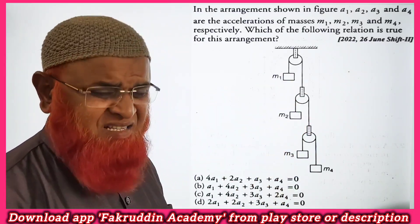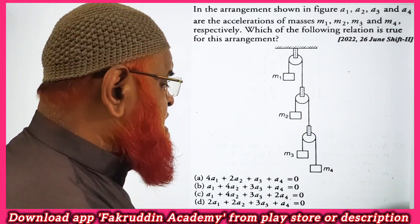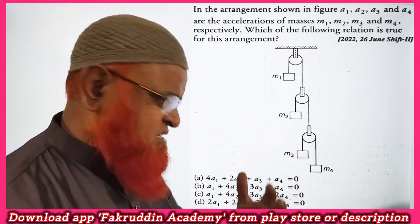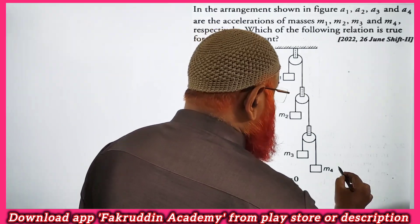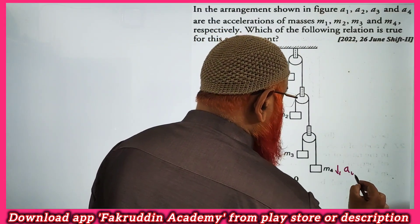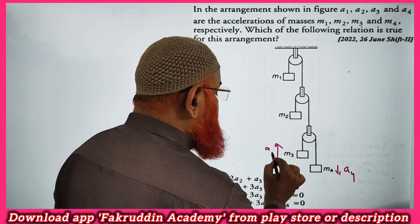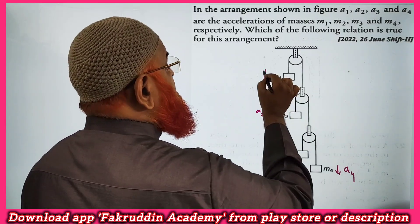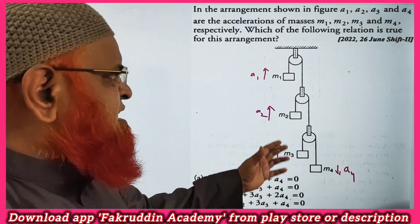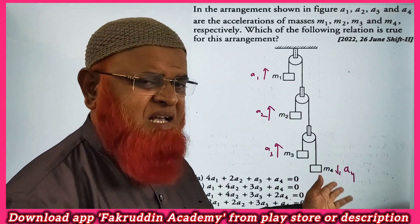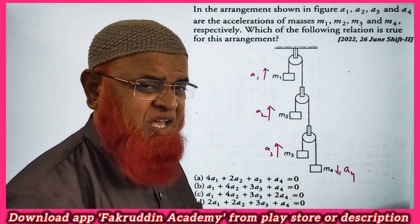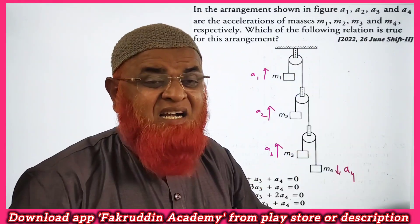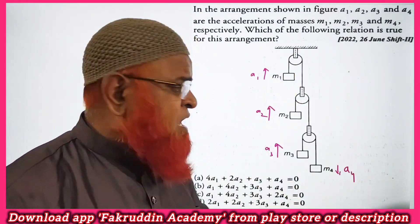There are three pulleys and four masses. Let us describe the accelerations of each and every mass. This block is coming downwards with acceleration a4, this is moving upwards with acceleration a3, this is moving upwards with acceleration a2, and this is moving upwards with acceleration a1. Depending upon the masses, the accelerations have been mentioned here.